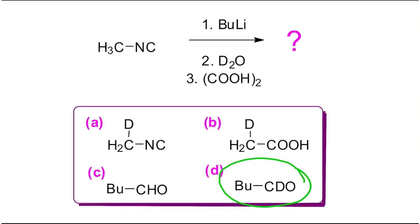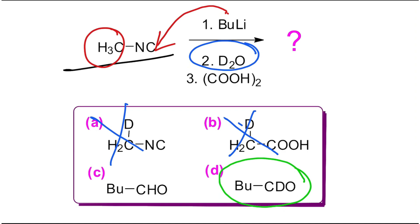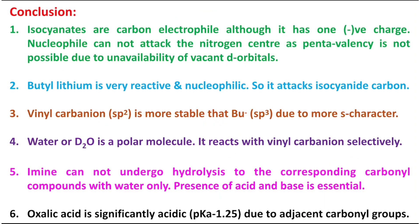This presentation may seem difficult, but the reaction is straightforward — the challenge is in how the problem is presented in exams. If this question appears in your exam, you should reach the right answer in under 30 seconds. You need to know the isocyanate structure and its reactivity — specifically that butyl lithium attacks as a nucleophile, not as a base abstracting a proton. Once you know nucleophilic attack occurs and D₂O deuterates the sp2 carbon, you know the aldehyde will carry deuterium. Options without deuterium are eliminated, leaving option D as the correct answer.